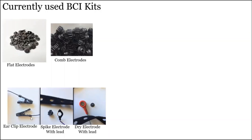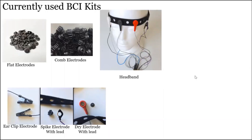Another type is the clip electrode, placed on the earlobe, which is used as a reference because it is far from the scalp. OpenBCI also provides a headband for electrode placement. An image of a mannequin shows the OpenBCI headband with electrodes placed, including the ear clip electrode. Once placed, you can directly connect this to your OpenBCI board for signal acquisition.